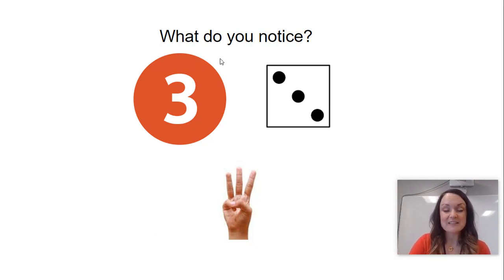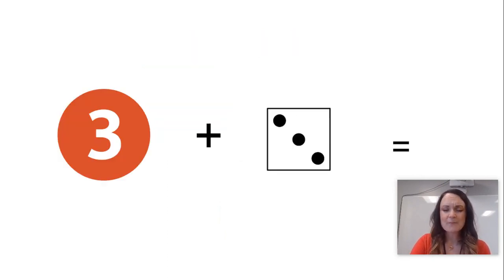What I want you to notice about this is we can show three in a lot of different ways. Okay? So we've been talking about doubles this week. If I add a three plus three, that's a double. What if I add the three and it looks like this and the three and it looks like this? Is it still a double? What do you think?